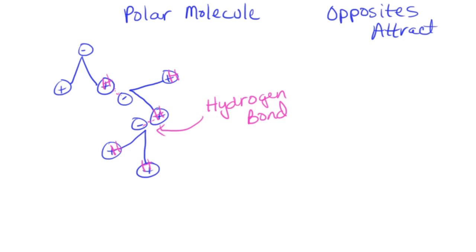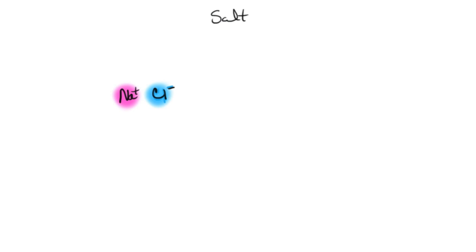Positives are attracted to negatives, so water molecules can interact like that, and they can also dissolve a lot of compounds based on that property. Here is an example: an ionic compound is made up of two ions with opposite charges. One is chlorine, which has a negative charge, and the other is sodium, which has a positive charge. This is sodium chloride — the normal salt you put on your food. These two are attracted to each other, forming what we call an ionic bond.